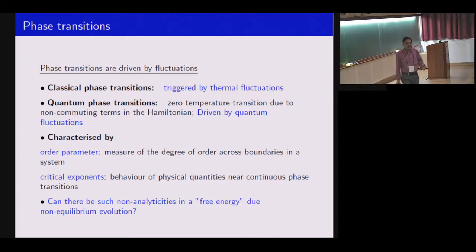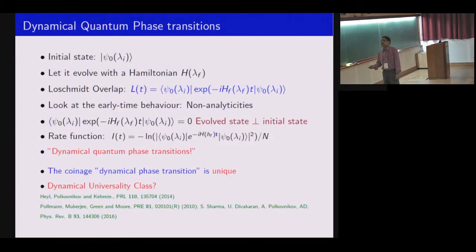People have been taking closed quantum systems, subjecting them to some quench so they evolve in a non-equilibrium way. Then ask the question, can I define an effective free energy density and are there non-analyticities in this effective free energy? All these phase transitions are characterized by non-analyticities in free energy density or ground state energy density. With this idea in mind, people proposed the concept of dynamical quantum phase transition. The coinage was in this paper, but it existed long time back from Shubroto in IIC and Polman and others. We did our part for the low quenching part.